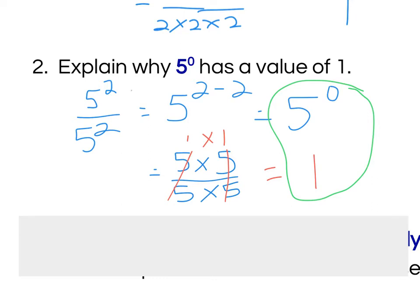So, that's how I can say that 5 to the power of 0 is equal to 1, because this whole thing right here is equal to both 1 and 5 to the power of 0. And so there is my explanation.